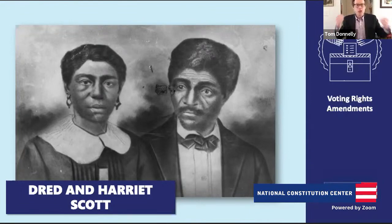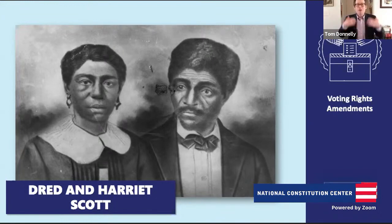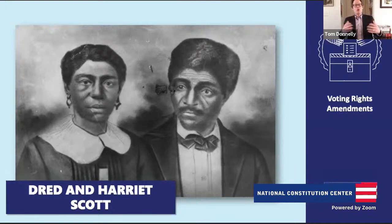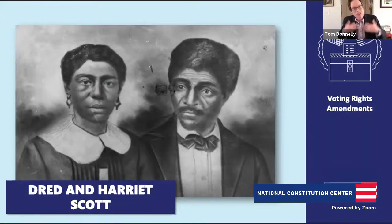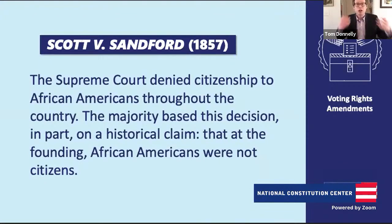It begins with Harriet and Dred Scott—husband and wife. They're enslaved people who are taken into free territory and then brought back into a slaveholding territory. They argue that by being brought to free soil they are free, and they sue for their freedom. There were many such freedom suits throughout this period. The case works its way to the Supreme Court, which in a divided decision says no—Harriet and Dred Scott are wrong.